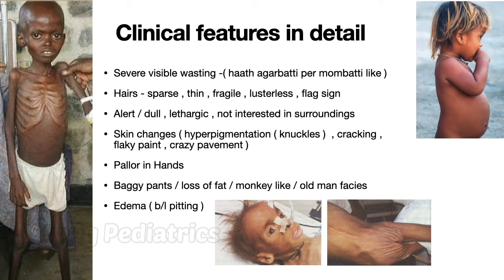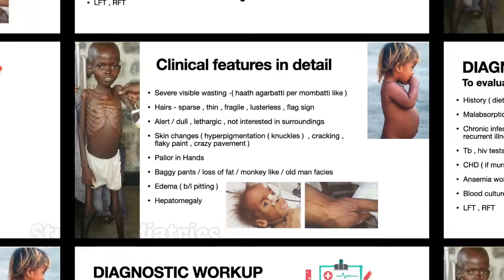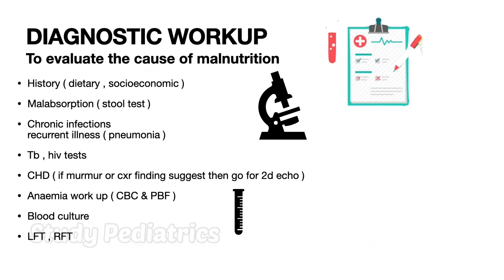Pallor can be seen due to loss of underlying fat around gluteal areas and cheeks. The patient may appear as if wearing a loose, ill-fitting pant, with a monkey-like or old man face. Edema may also be present, and if the abdomen is palpated, hepatomegaly or enlarged liver can also be seen. A thorough investigation must be done to rule out any chronic underlying disease such as malabsorption, recurrent pneumonia, TB, HIV, or any metabolic disease.